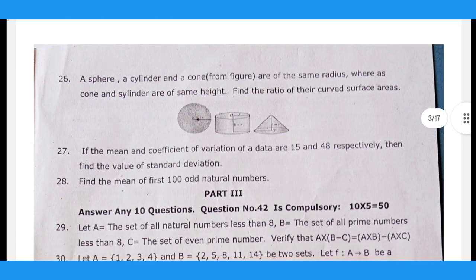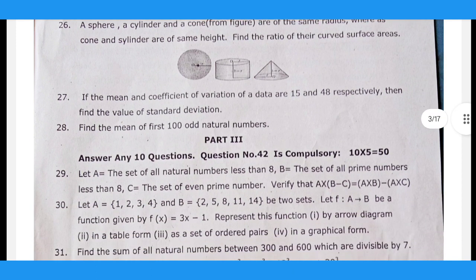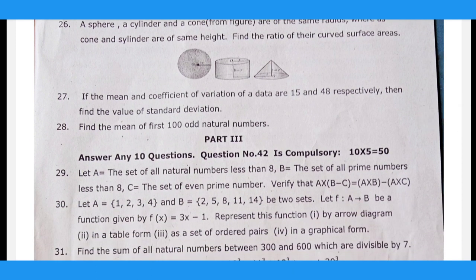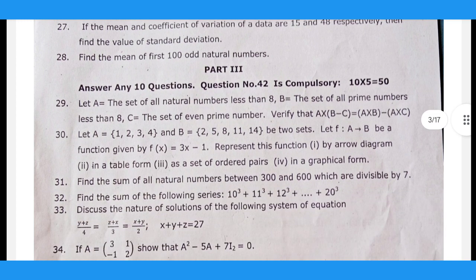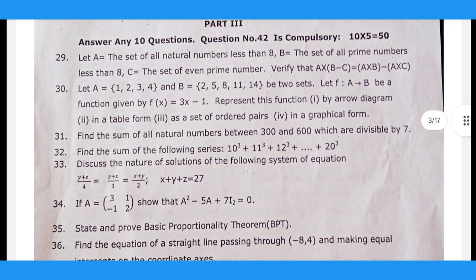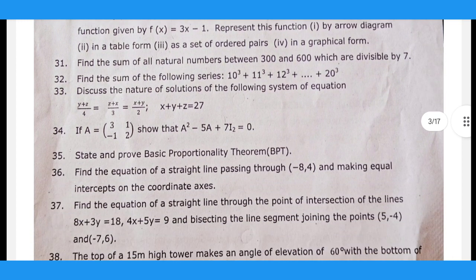Question number 42 is compulsory and asks to find the mean of the first 100 odd natural numbers. This is worth 10×5=50 marks. To find the mean, use the formula x̄ = Σx/n, where n = 50.